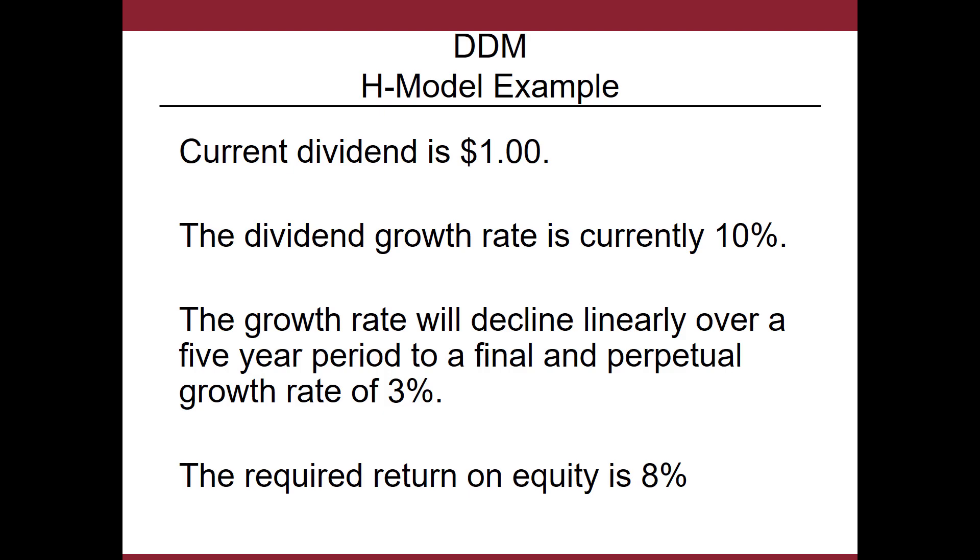Consider a company that has a current dividend of $1, and that dividend has been growing at a 10% rate. What if you assume the growth rate is going to decline in a linear fashion over a five year period to a final and perpetual growth rate of 3%?